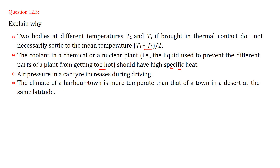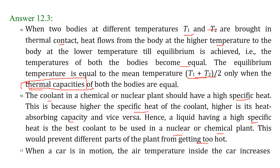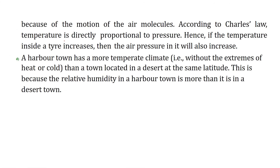Air pressure in a car tire increases during driving because the temperature increases. When the car is in motion, the air temperature inside the tire increases due to the motion of the air molecules. By Charles's law, pressure is directly proportional to temperature. So if temperature inside the tire increases, pressure also increases. This is why tires can burst on highways when a car is travelling at 100, 120, or 130 kilometers per hour — the heat generated inside the tire may cause it to burst.